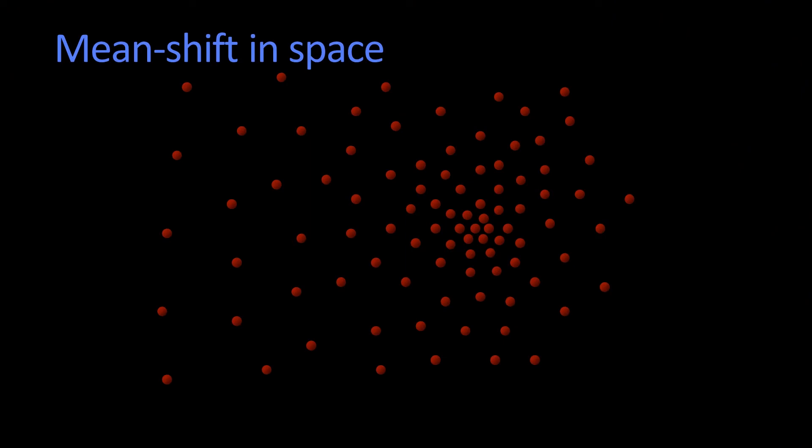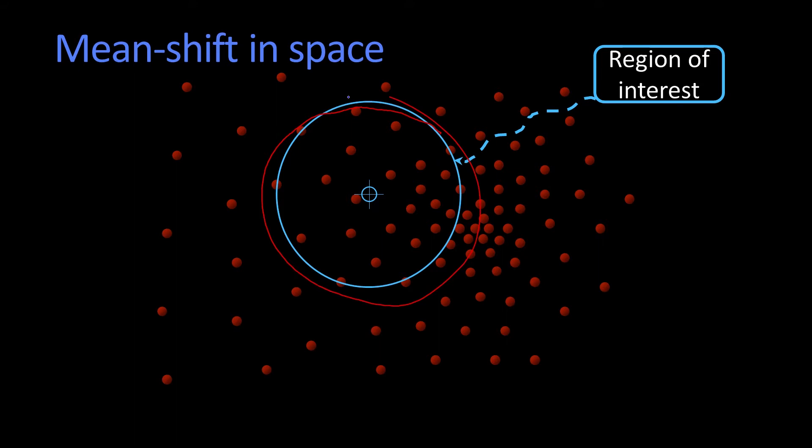So the idea of mean shift is the following. Here I have a distribution of points in some feature space. I plop down some region of interest. And that region is drawn here as a circle, but think of it as a Gaussian blob, right? So it actually is more weighted in the middle than it is to the outside. Mean shift tends to work a little bit better if you have a center weighting.